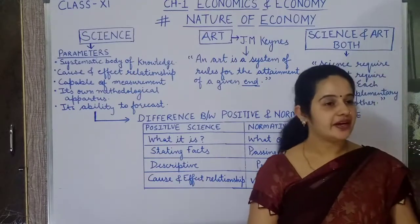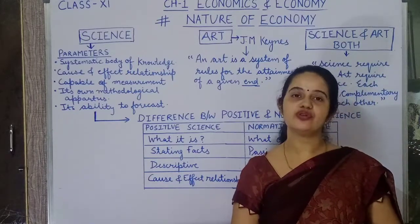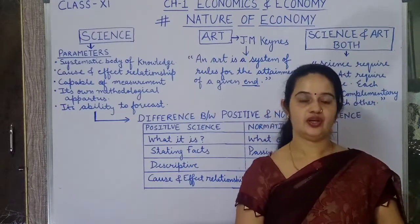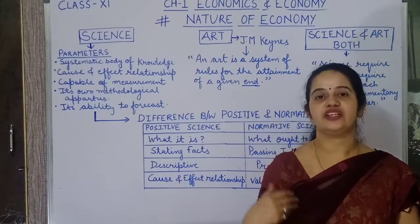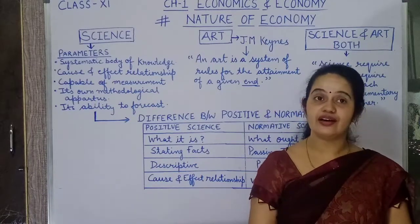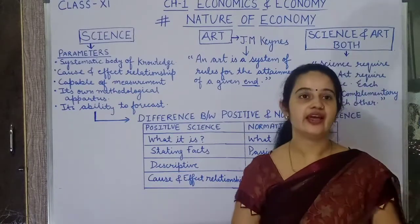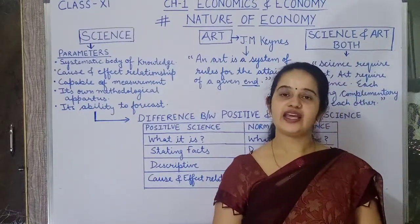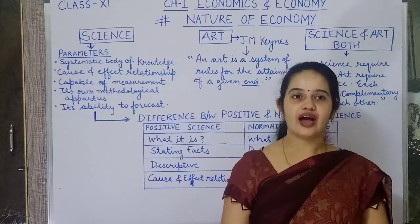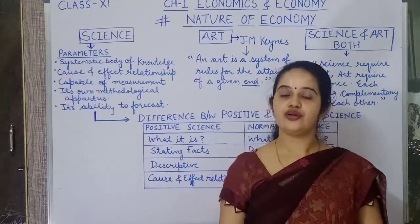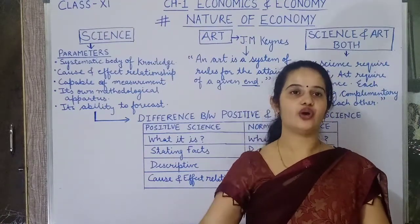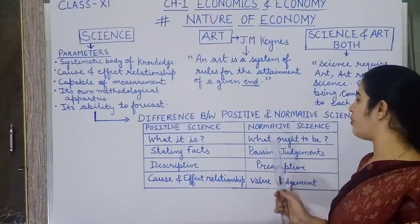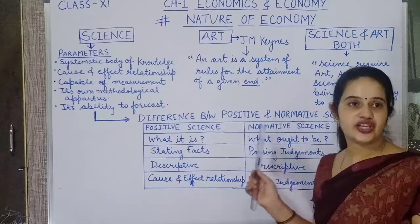Let us understand better with an example. Statement one: 'Ram is eating pasta.' This is a positive science statement because it states what Ram is doing. Now consider that Ram is overweight. Another statement: 'Ram, you should eat salad.' This is a normative science statement. So positive science always states a fact, whereas normative science passes judgment.